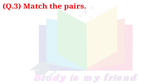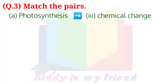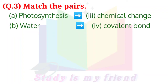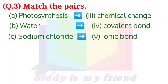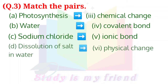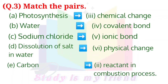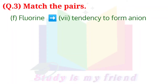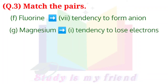Question 3: Match the pairs. A. Photosynthesis → 3. Chemical change. B. Water → 4. Covalent bond. C. Sodium chloride → 5. Ionic bond. D. Dissolution of salt in water → 6. Physical change. E. Carbon → 2. Reactant in combustion process. F. Fluorine → 7. Tendency to form anion. G. Magnesium → 1. Tendency to lose electrons.